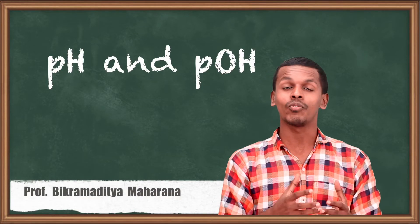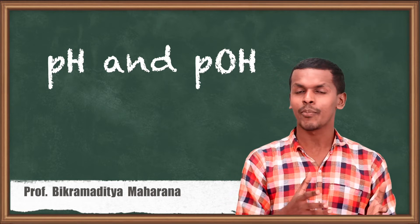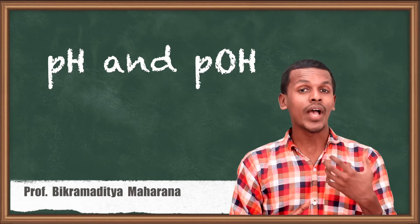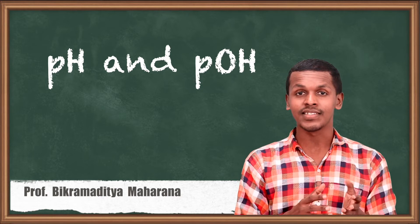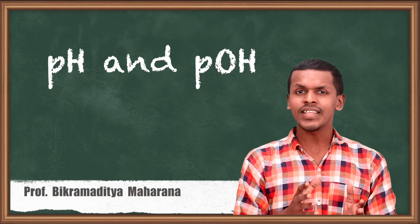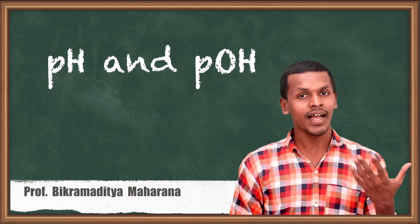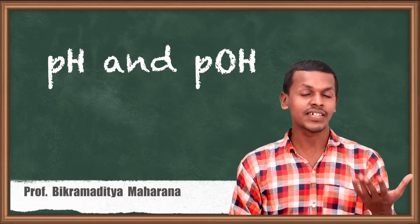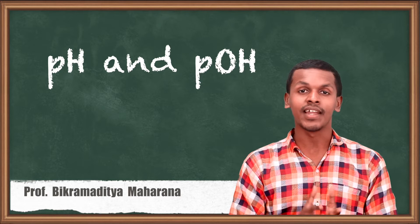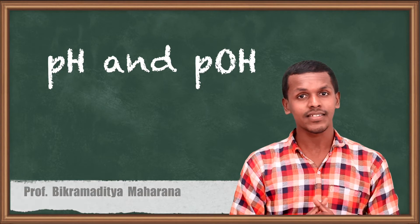Hi friends. In the previous lecture we got to know what is a polyprotic acid, and that a diprotic acid as well as a triprotic acid has the capability to ionize and release 2 H+ ions and 3 H+ ions respectively. So based on this, a particular acid can liberate more than 2 hydrogen ions, which we could call acid hydrogens. That is the reason we are going to talk about pH and pOH, which will clarify the strength of the acid.